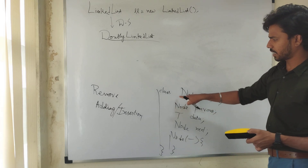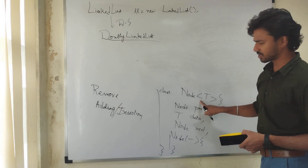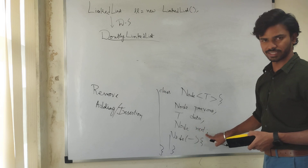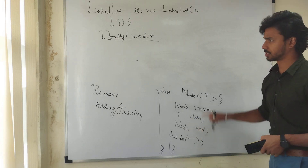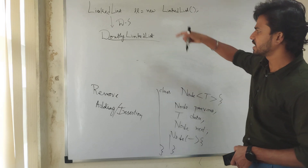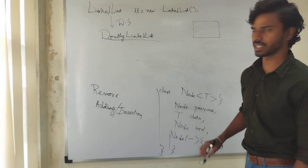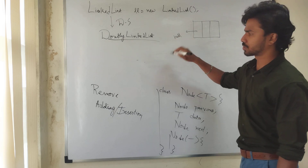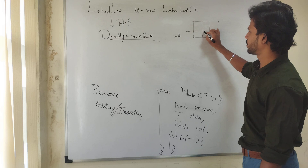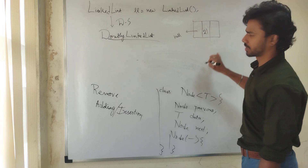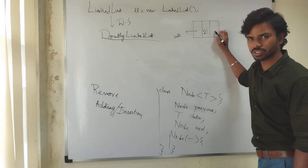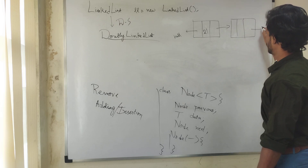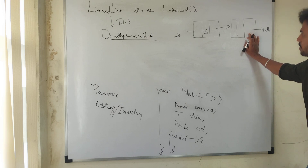Internally, LinkedList uses a Node class concept. Inside the Node class, we declare a variable using the same class name: node previous, node next, and a data field T data. Whenever we create a LinkedList object and add data, a node object will be created with three fields. The first field will be null because there is no previous node — it is the starting node. Then we insert the data, for example 21, and the third field stores the address of the next node.